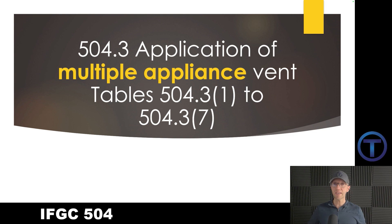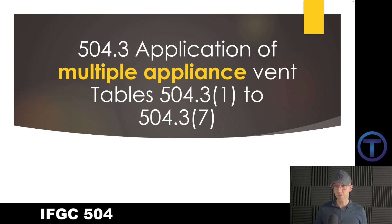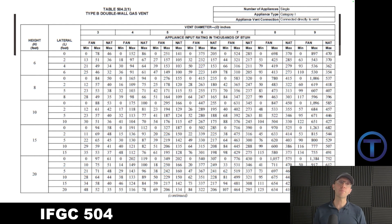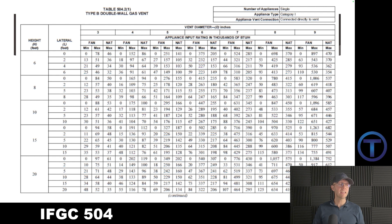Those sizing tables are specific to multiple appliances, so keep that in mind as you're trying to figure this out. Here's an example of one of the tables, Table 504.2(1). There's a lot of information here. In order to use these tables effectively to find your information, first of all you have to understand the system you're dealing with — the appliance, the height, the lateral, the type, whether it's fan or natural draft. You're going to need to know about the appliance. All that information comes together as we search this.